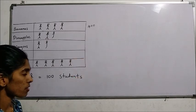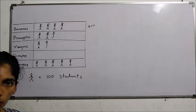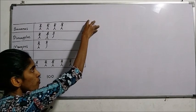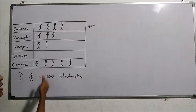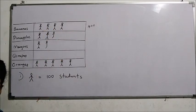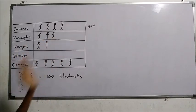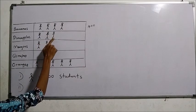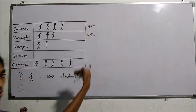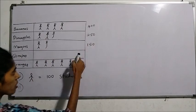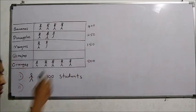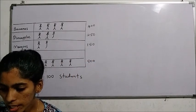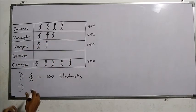If the number is not a multiple of 100 or is complex, simply divide the given number by the number of symbols. Now we can fill in the numbers: banana — 400, pineapple — 100, 200, plus half = 250, mango — 100, 150, orange — 5 symbols so 500. Question 2: how many students like pineapple? 250 students.